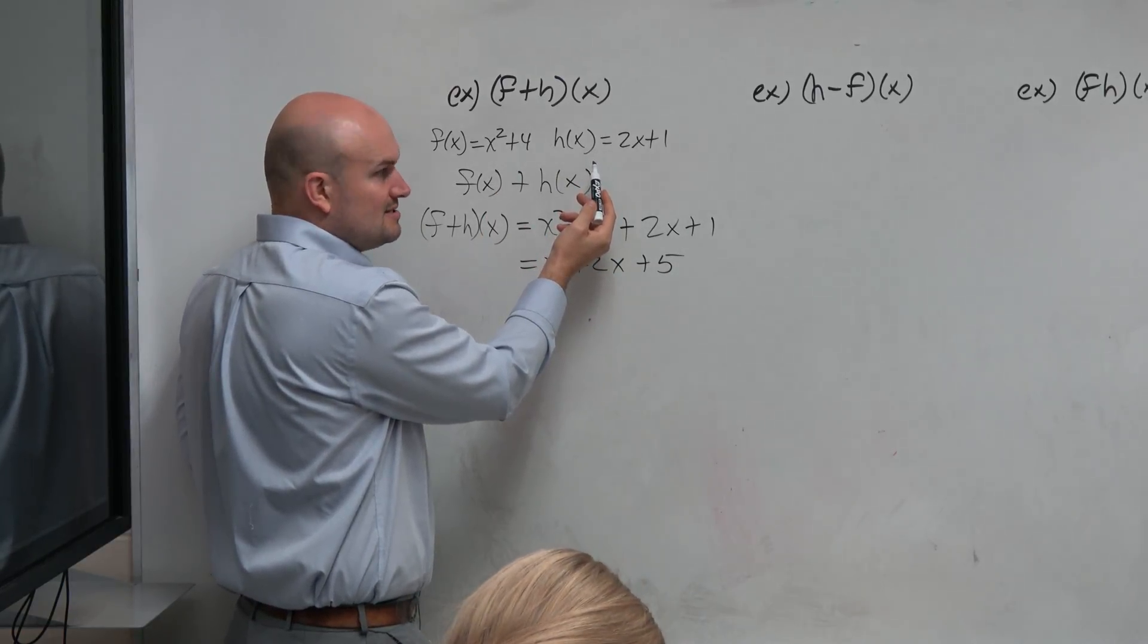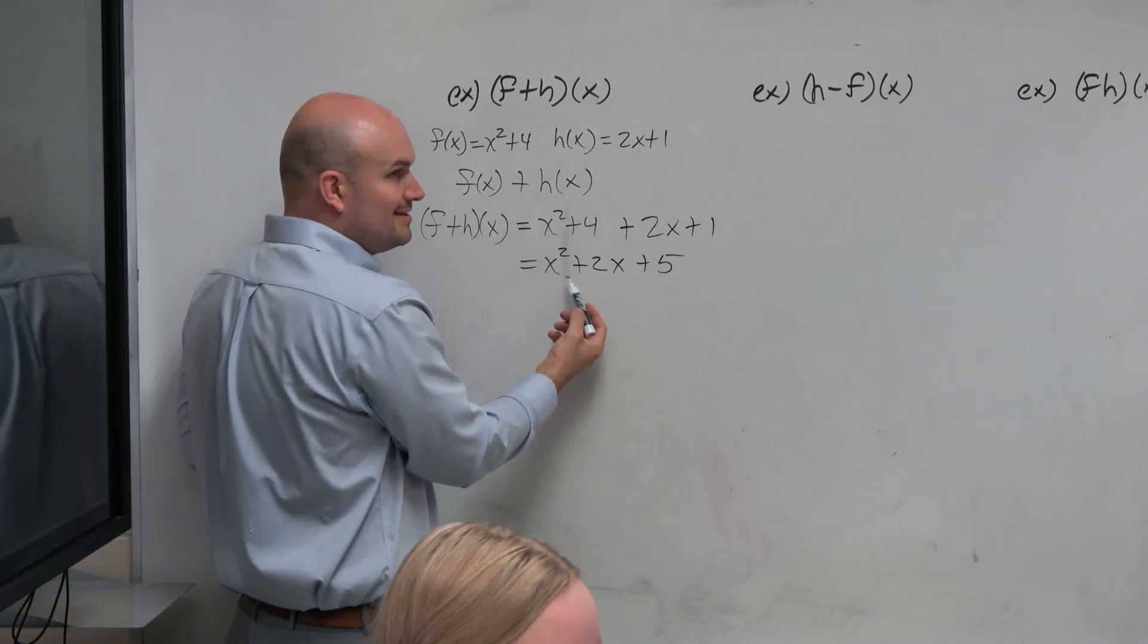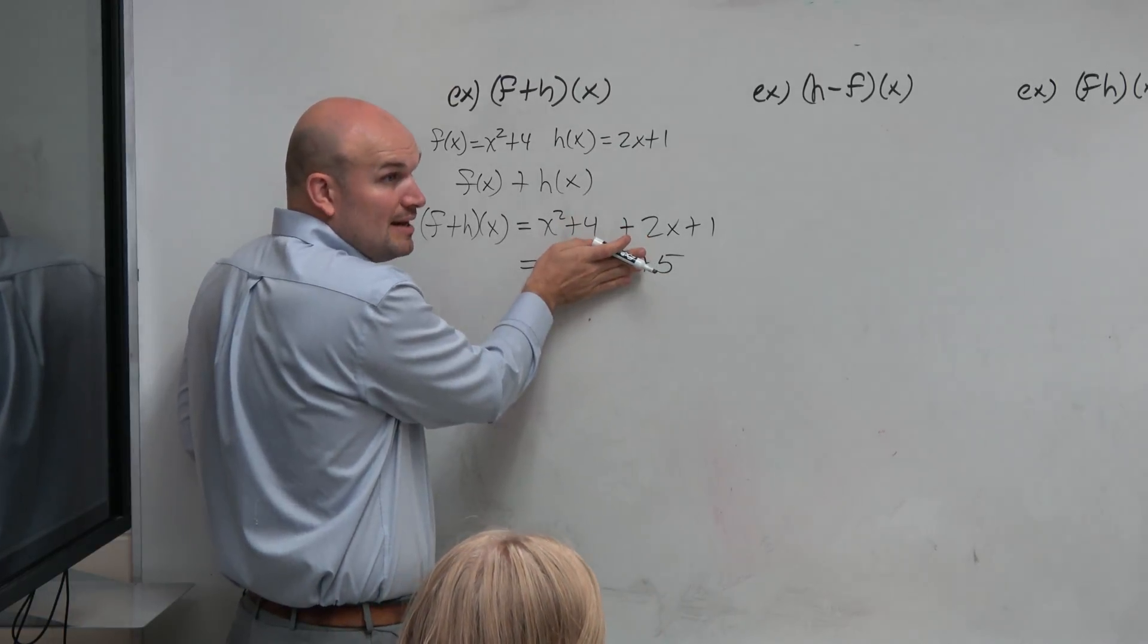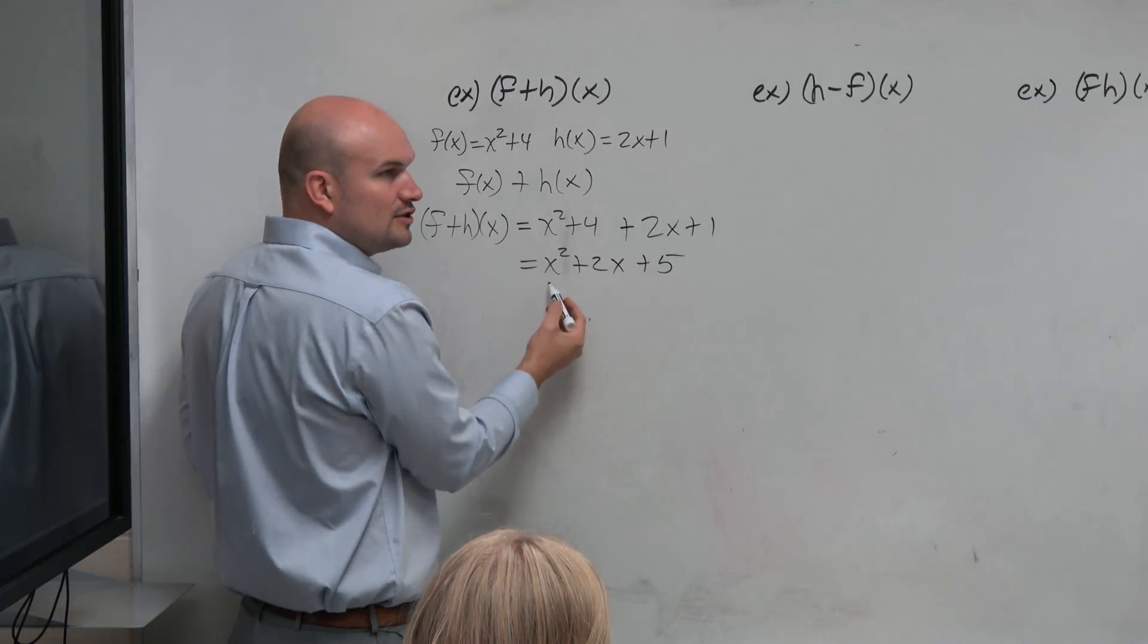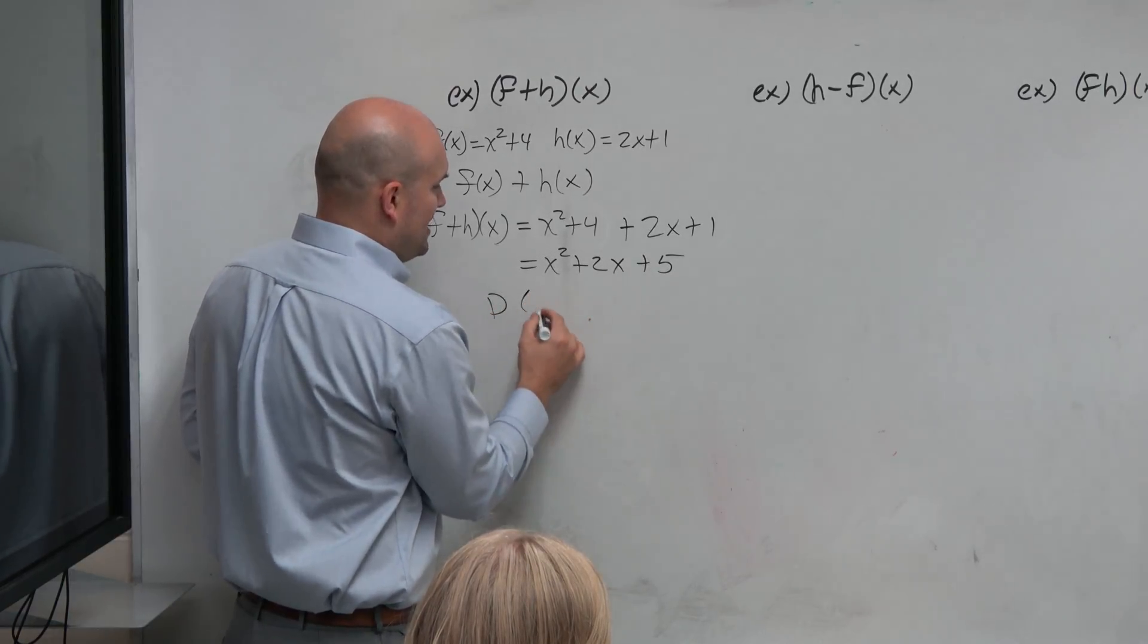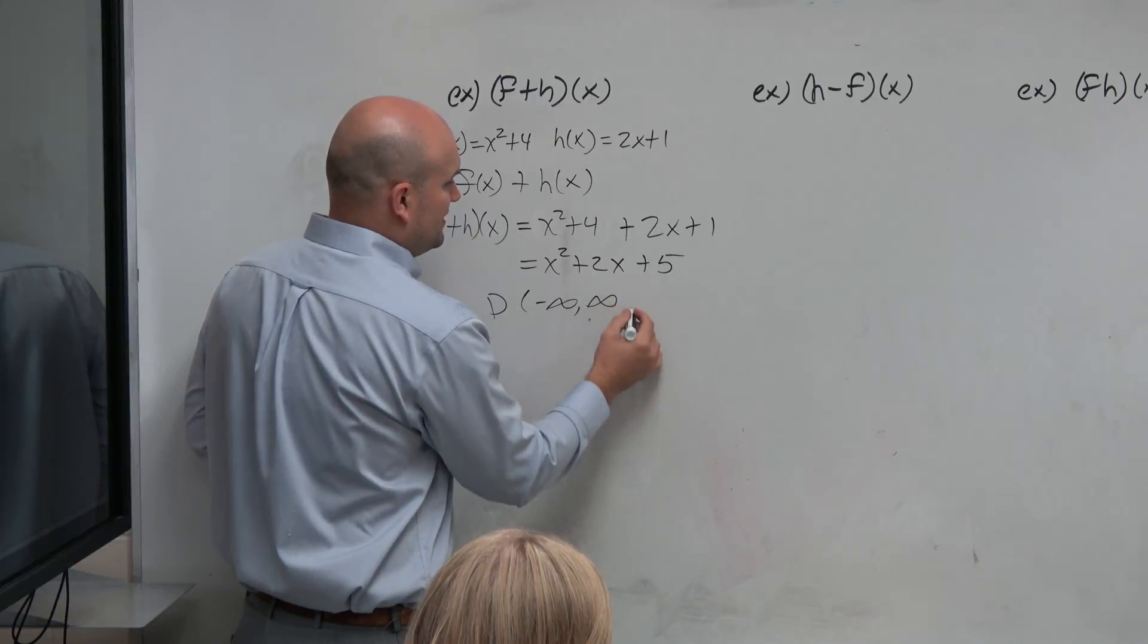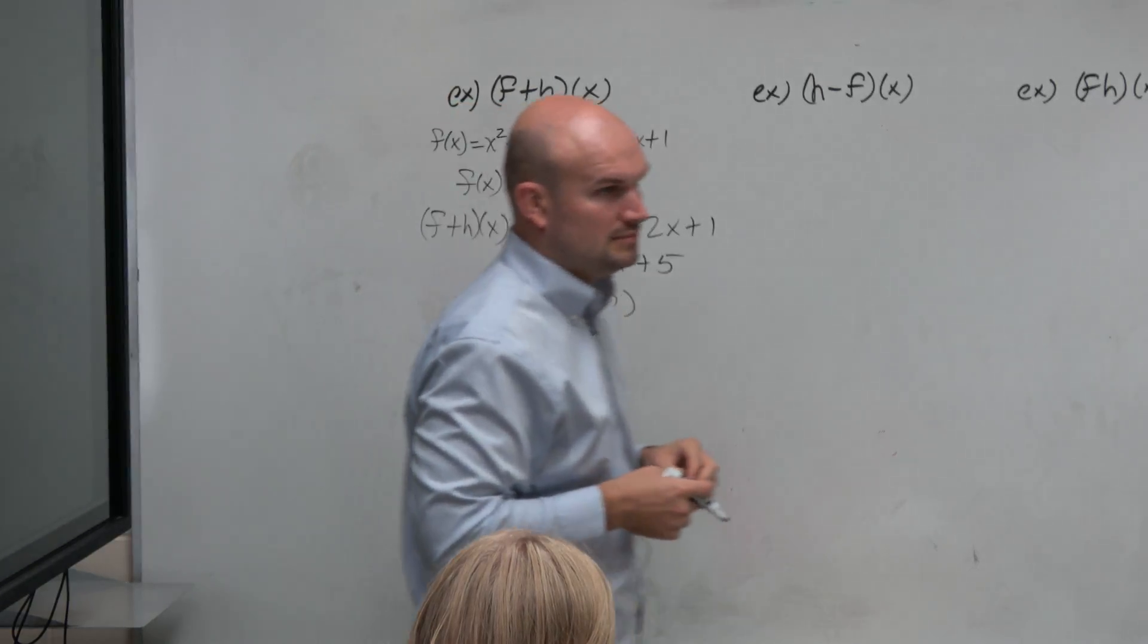So would it make sense then that the combination of them is still going to be all real numbers without even knowing what the combination is? And you can see, obviously, the combination gives you another quadratic. So we can just say the domain here is negative infinity to negative infinity.